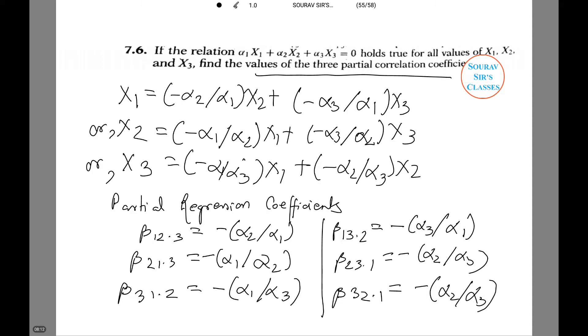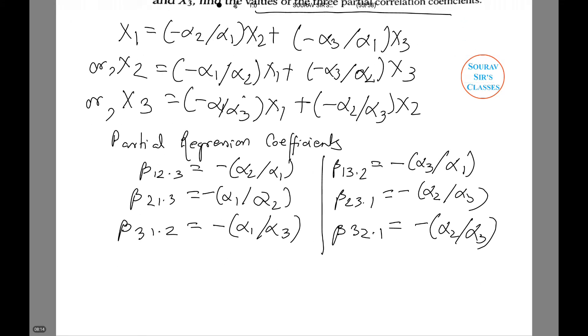Now recalling a very familiar formula, r 1 2 dot 3 equals root of beta 1 2 dot 3 into beta 2 1 dot 3 which equals root over minus alpha 2 into minus alpha 1 whole divided by alpha 1 into alpha 2.